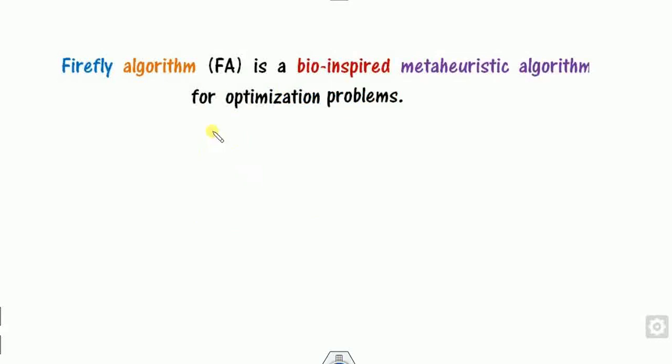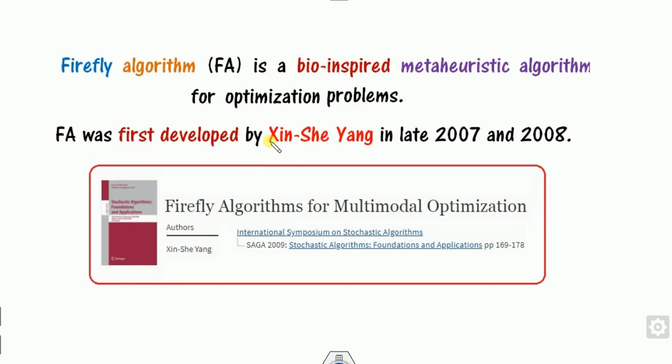The Firefly Algorithm, abbreviated as FA, is a bio-inspired meta-heuristic algorithm which is recently very popular for solving optimization problems. This firefly algorithm was initially proposed and developed by Xin-She Yang in the late 2007–2008, and the results were presented at the International Symposium on Stochastic Algorithms.